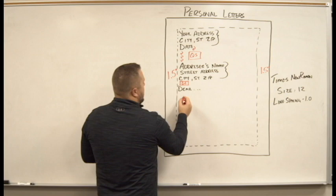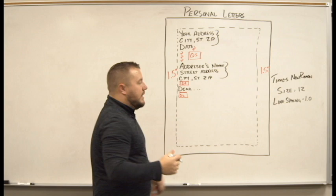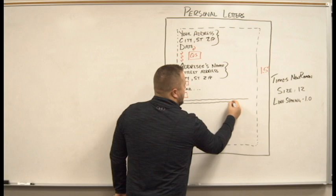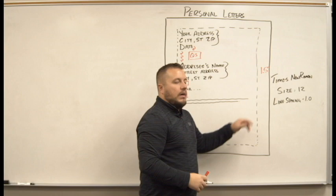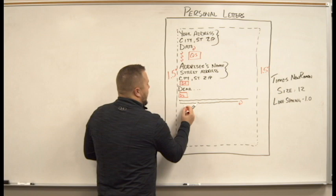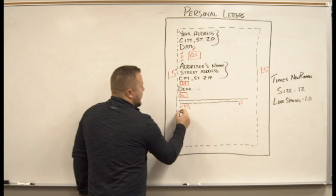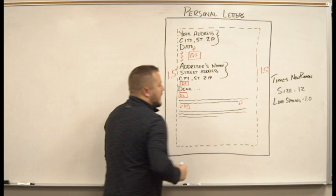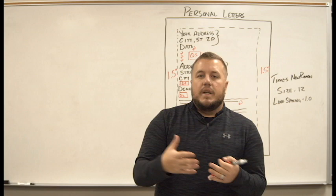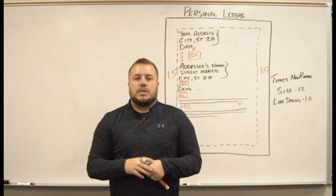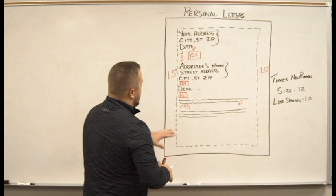Then we're going to go double space again, and this is where we write the body of our letter. We don't indent — we just start typing. We don't hit Enter at the end of a line unless we're ending a paragraph. When we end a paragraph, we hit Enter twice for a double space, and then start the next paragraph. A typical cover letter should have three to four paragraphs.